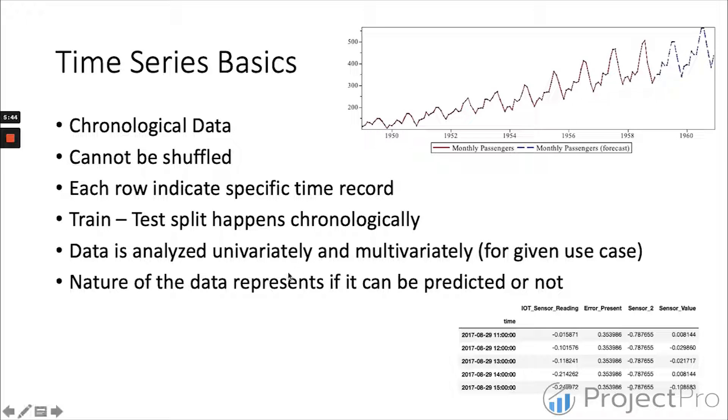The data is analyzed univariately or multivariately for the given use case. We can use just one column at a time or combine two or more columns like we did in Gaussian process and multiple linear regression. The nature of the data represents if it can be predicted or not. That's the major pointer we're dealing with in every series - we first analyze what is the nature of the data, what kind of data are we dealing with.